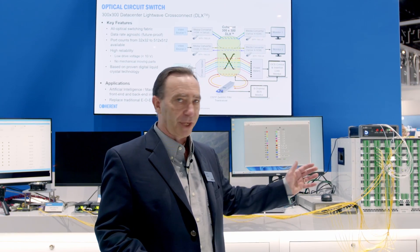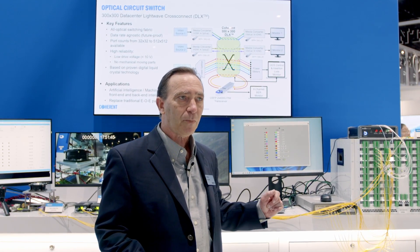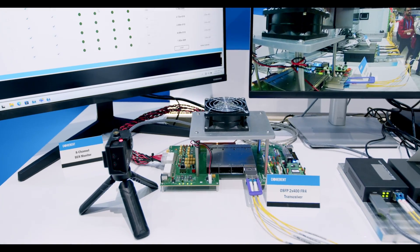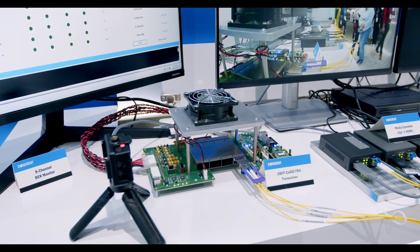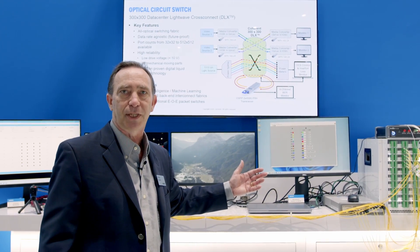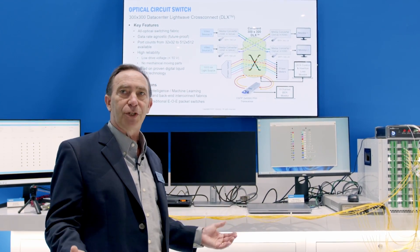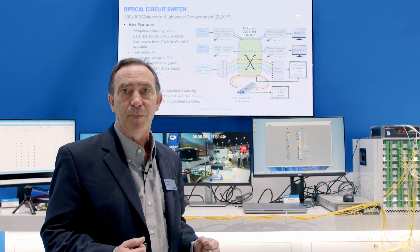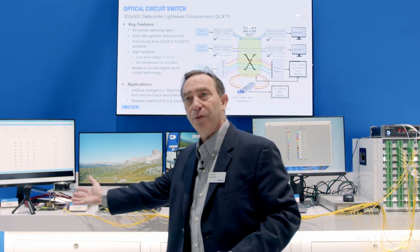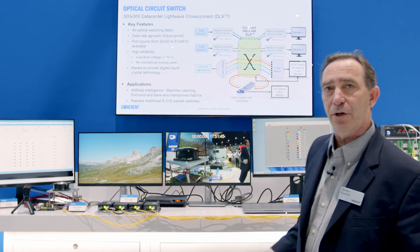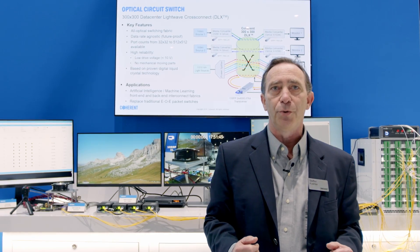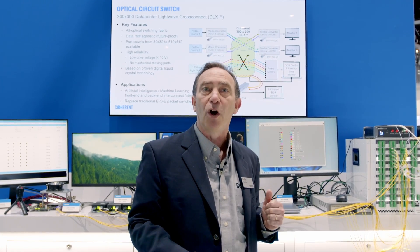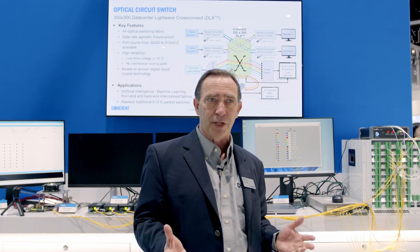We're showing you three things in today's demonstration. First, a video signal generated by a camera or DVD player running through the switch at a very low data rate — just 10 gigabits per second. The data rate is not important because there's no O-E conversion here. Typically in AI networks we'll have 800 gigs, and we also have an 800 gigabit module running through our switch, switching from one port to another. The third thing I'll show you is the insertion losses in this switch, putting CW light through and showing very low insertion losses.